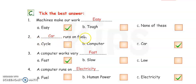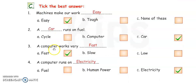Second. Dash runs on fuel. Cycle, computer or car. Which runs on fuel? Car. Computer runs on electricity. Cycle runs on human power. So, answer is car. And you have to tick here and write car in this blank.